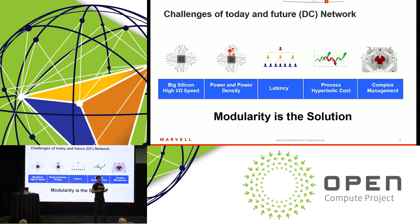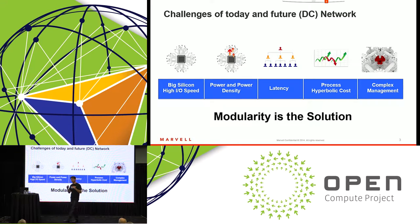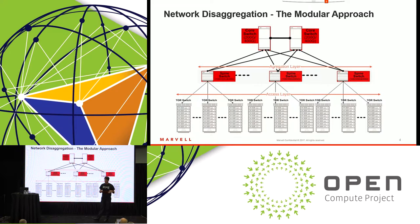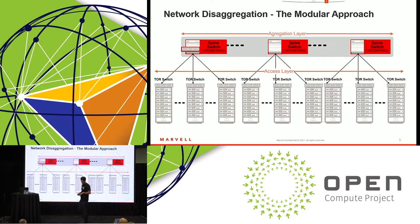Our solution to the problem is to introduce modularity in the network. We're going to innovate and disaggregate the network from a hardware perspective. Up until now, everybody was doing disaggregation of software and hardware. Now we are disaggregating the hardware itself. Let's look at the typical data center network. What you see here is a three-tier network: we have the core switches connecting to the outside world, the spine switches as the middle layer, and the top-of-the-rack switches on each one of the racks.